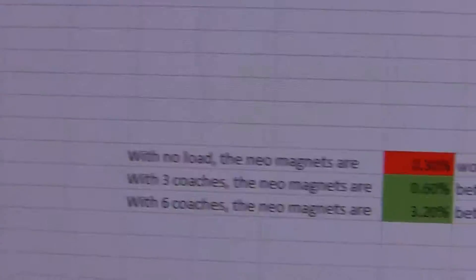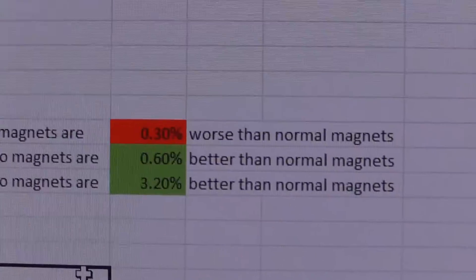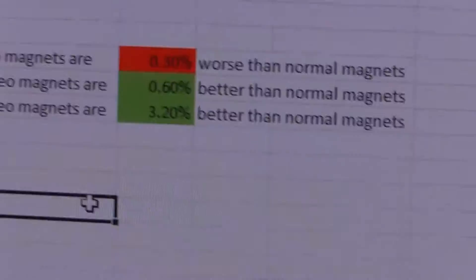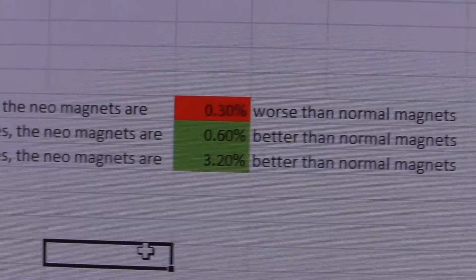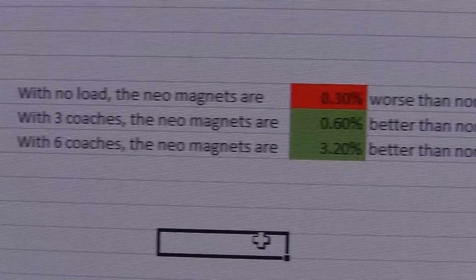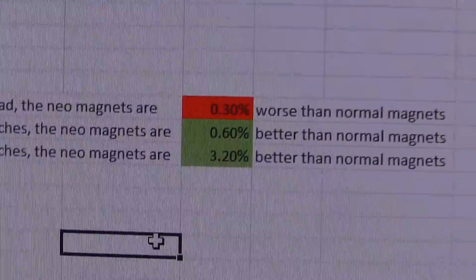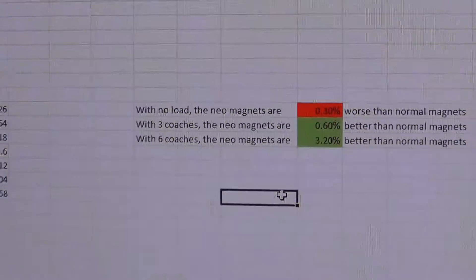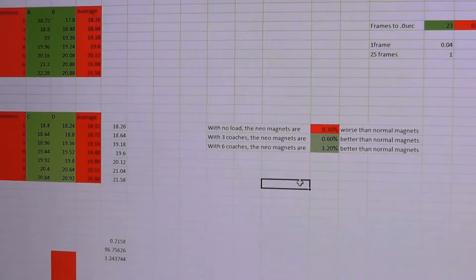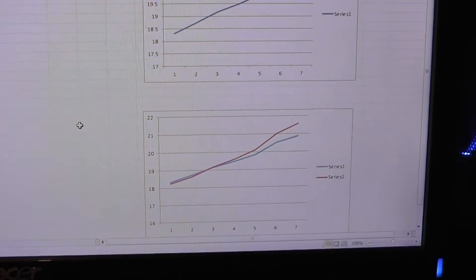So when the loco is on its own, the neo magnet took 18.32 seconds. But the non-neo took 18.26 seconds. So a little bit quicker without the neo magnet. So the benefits are unnoticeable of the neo magnet. There are benefits, but only of 0.2 seconds in a lap. So I'll get you some percentages there, and we will see. So the effects actually are tiny with the new neodymium magnets. With no load, the neodymium magnets are 0.3% worse than normal magnets. So basically, a totally tiny amount, an unnoticeable amount. With three coaches, the neo magnets are 0.6% better than normal magnets. And with six coaches, the neo magnets are 3.2% better than normal magnets. So you can imagine, if we added 12 coaches, you probably would see quite a bigger increase.